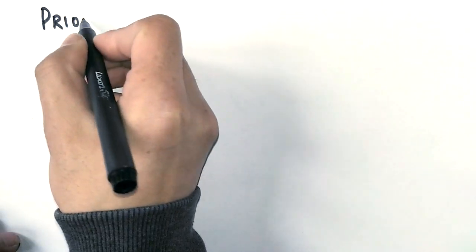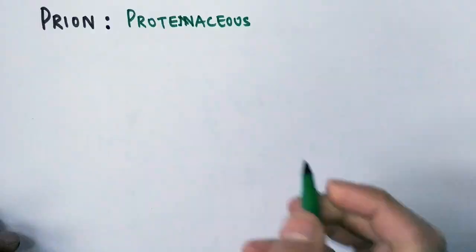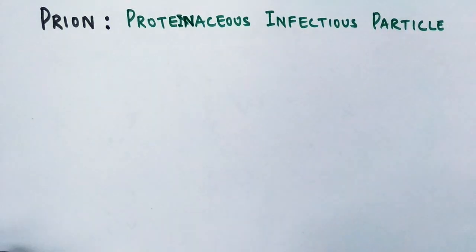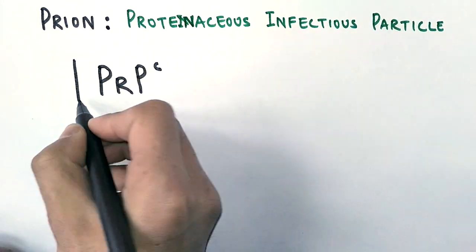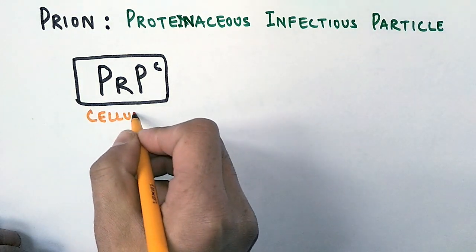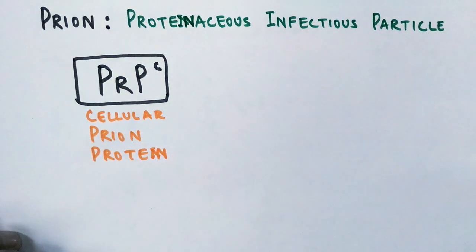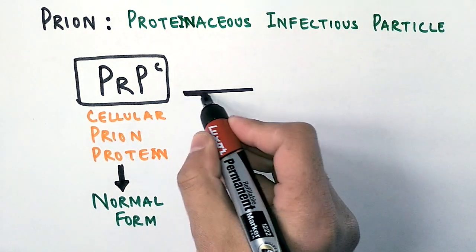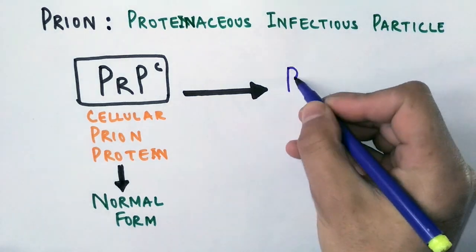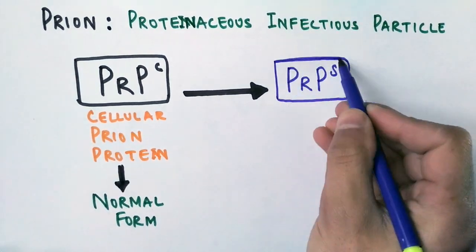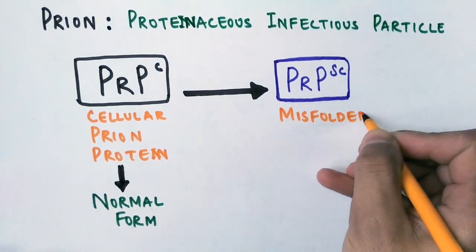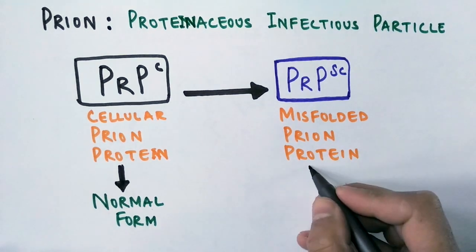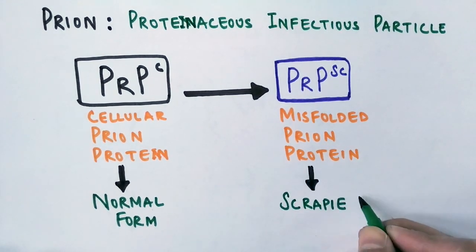So basically the prion is a proteinaceous infectious particle. So we see here the PrP^C form, that's a cellular prion protein form, is a normal form. It gets transformed into PrP^SC form, that is the misfolded prion protein, or we can say evil protein because it damages other proteins and other cells. So we call it a scrapie form.